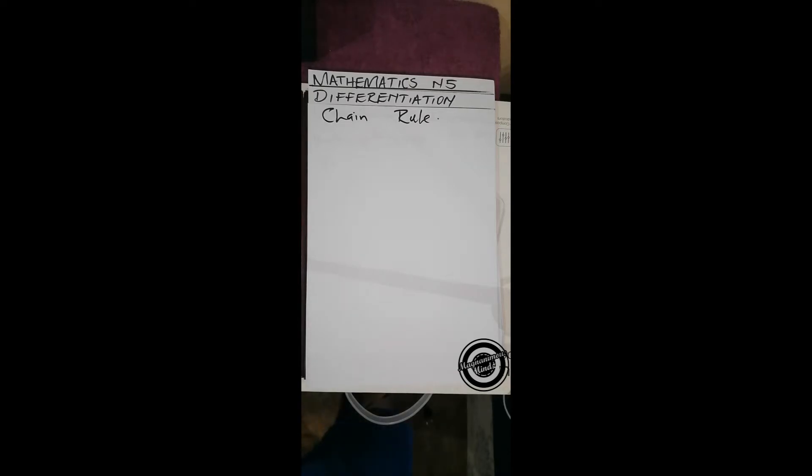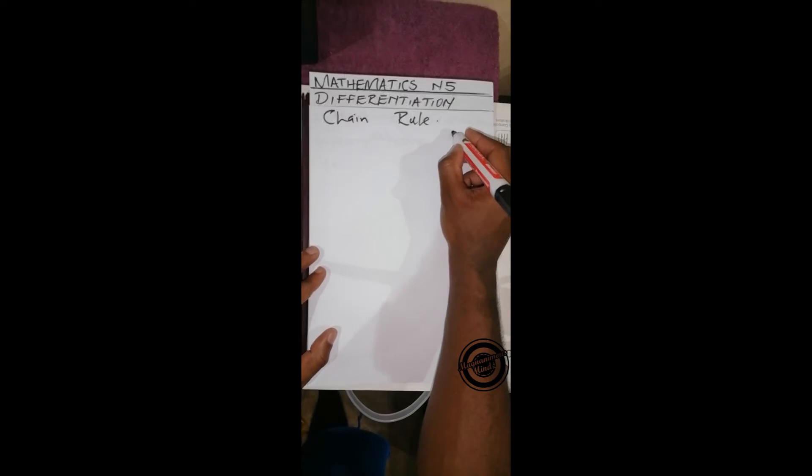Greetings guys, this is Magnanimous Minds Lectures Online. Today we continue with Mathematics N5 differentiation, and now we look into the chain rule - a technique used to differentiate functions that have other functions inside them. To explain that, I'll make use of a past exam question which is from question paper of April 2019.